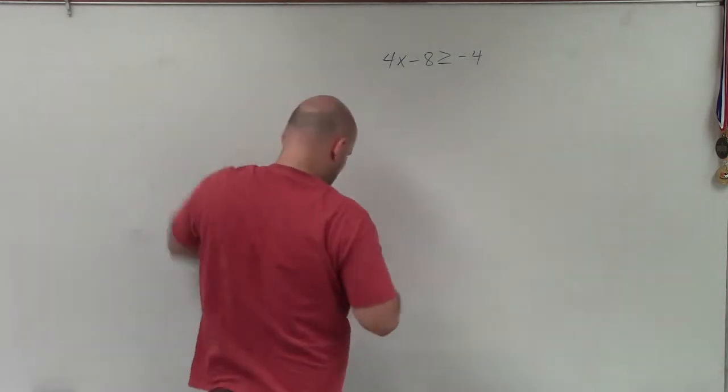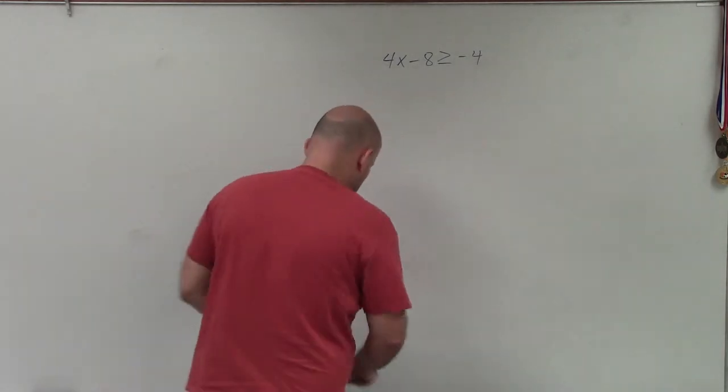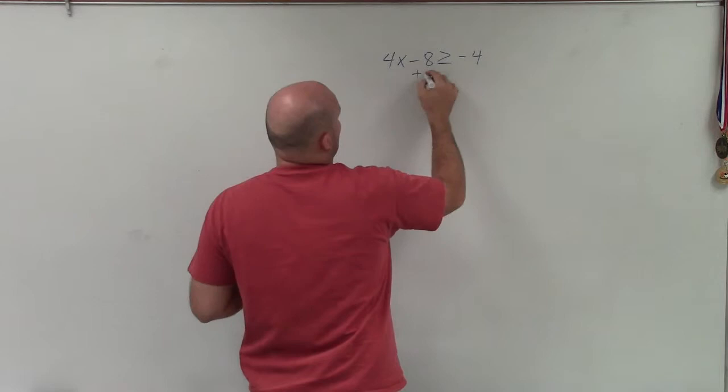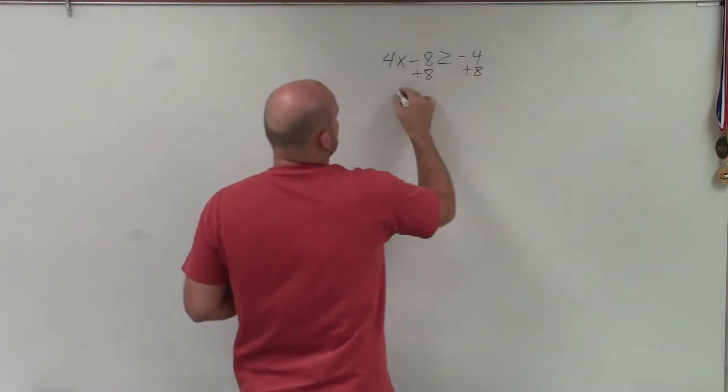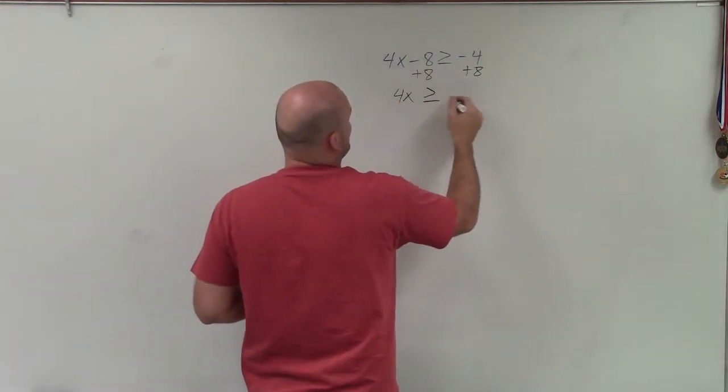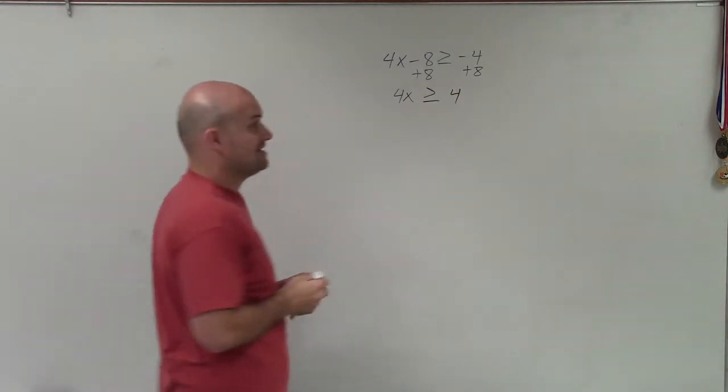We always undo addition and subtraction first. So therefore, I'll add 8 to both sides. So I have 4x is greater than or equal to 4, positive 4.